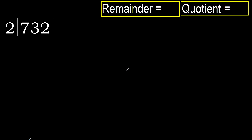732 divided by 2. 7 is not less, therefore work with 7. Find which number, when multiplied by 2, is nearest to 7 but not greater.